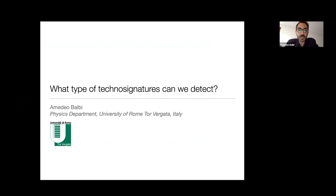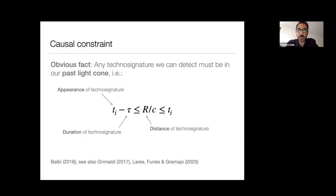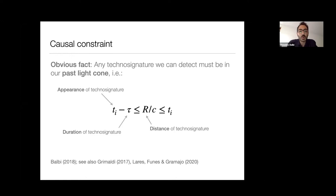What type of technosignatures can we detect? This talk is not about our technical limitations or capabilities, but on a slightly different aspect. The very obvious fact is that if we want to detect a technosignature, we can only detect it if it is on our past light cone — meaning its signals have to travel at the speed of light or less. So this poses a causal constraint.